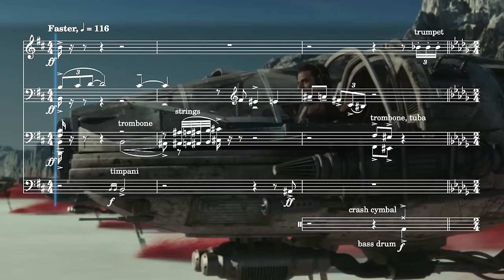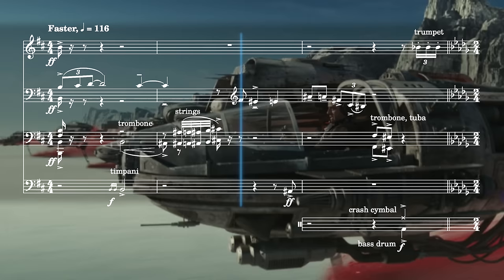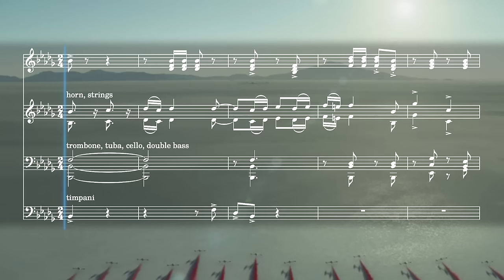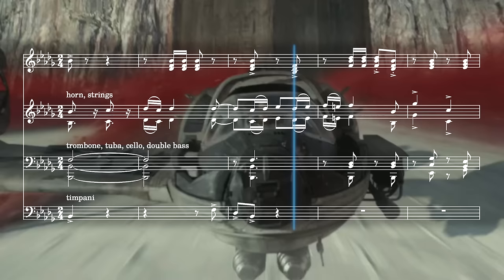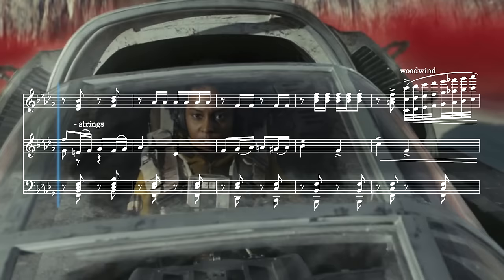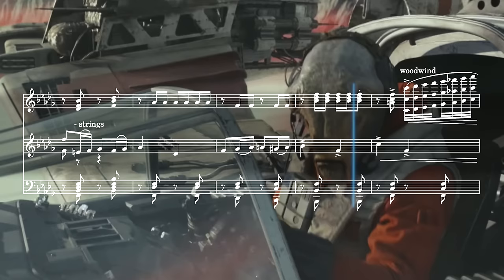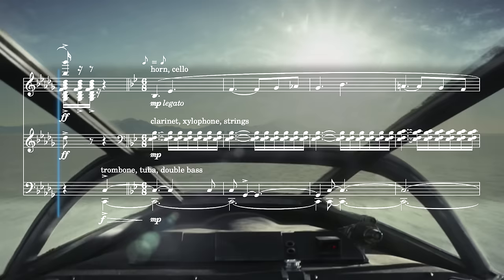Some of the instability of the earlier incidental music returns, but eventually it leads back into B-flat minor for an even more defiant version of the resistance march. Then a sharp cut into a second version of Rose's theme as the camera focuses in on her.